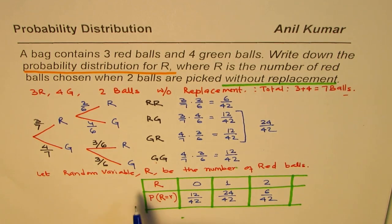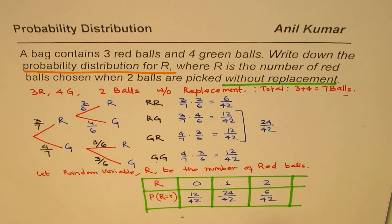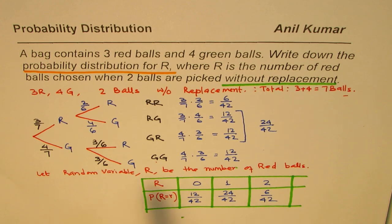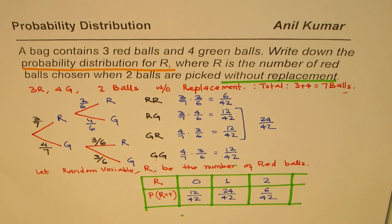When we provide the random variables along with their probabilities, we call this a probability distribution. This table represents the probability distribution for the random variable. I'm Anil Kumar and I hope these steps are absolutely clear. Thank you and all the best.